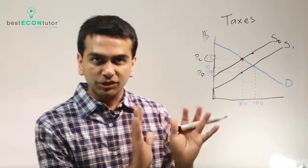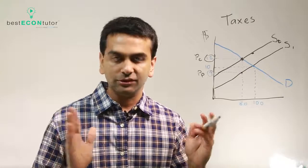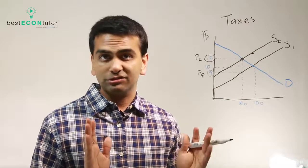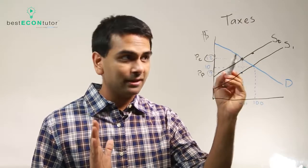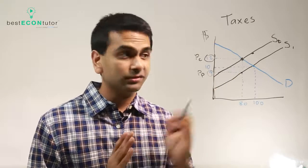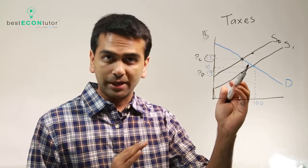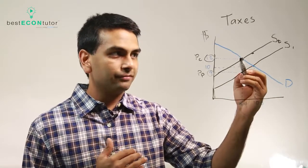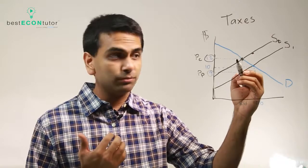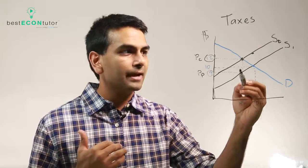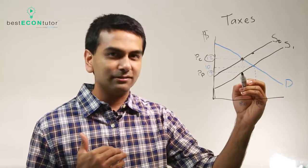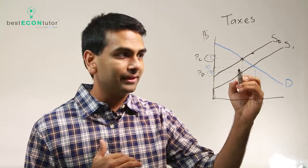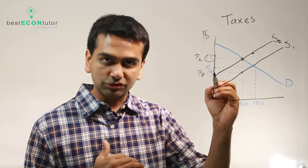To recap: a three dollar tax shifts the supply curve up by three everywhere, giving us a new supply curve. Then we find the new intersection — that's the price for the customer. It's typically going to be higher than the old price, but not higher by the full amount of the tax. For the producer's price, it's the new consumer price minus the tax amount. Notice that gets you back onto the old supply curve, because this gap is the tax amount — twelve minus three gets you to nine. That's how you find the producer's price.